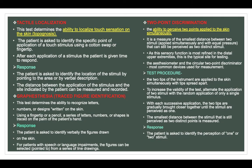Two-point discrimination: this is the ability to perceive two points applied to the skin simultaneously, and is a measure of the smallest distance between two stimuli applied simultaneously and with equal pressure that can still be perceived as two distinct stimuli. As this sensory function is most refined in the distal upper extremities, this is a typical site of testing. The esthesiometer and the circular two-point discriminator are the most common devices used. The two tips of the instrument are applied to the skin simultaneously with tips spread apart; alternate with random single-stimulus application to increase validity. With each successive application, the tips are gradually brought closer until stimuli are perceived as one. The smallest distance still perceived as two distinct points is measured. Response: the patient identifies the perception of one or two stimuli.